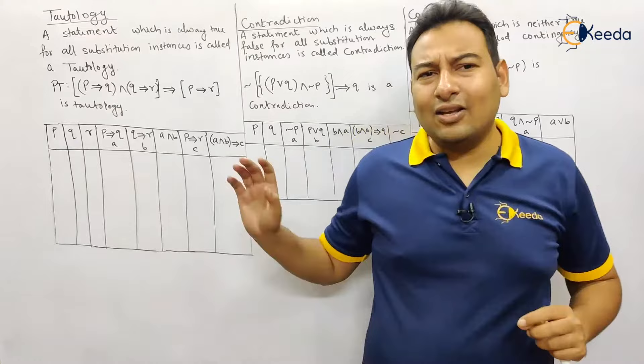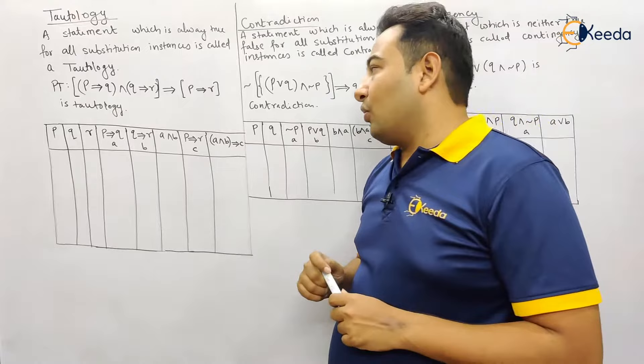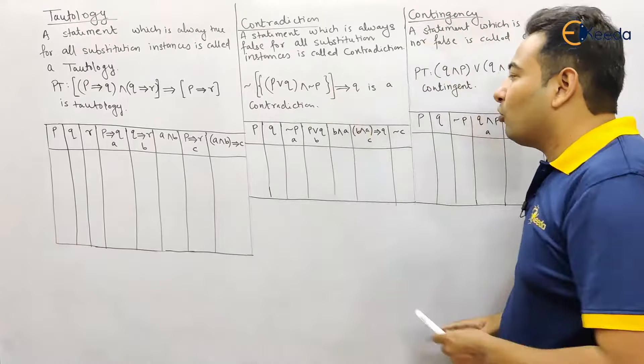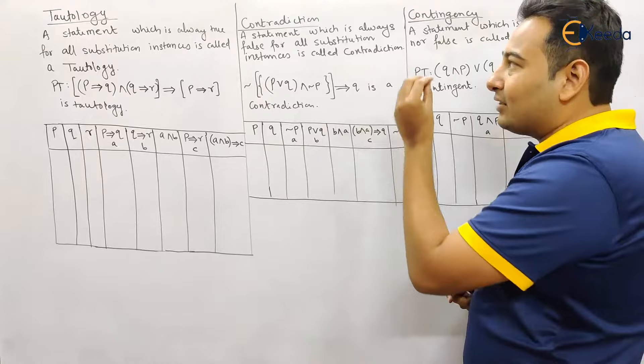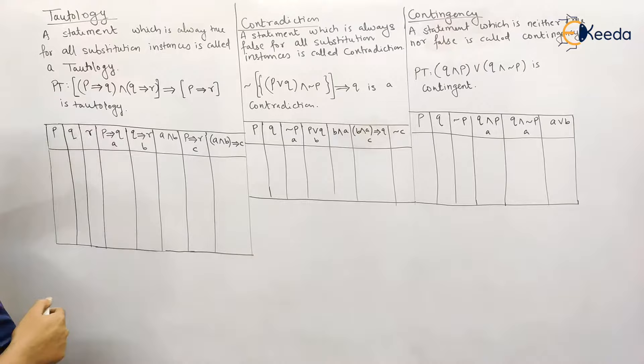What is a tautology? A statement which is always true for all substitution instances is called a tautology — that means if all the values in that particular column are true, it is a tautology. What about contradiction? If all the values in that column are false, it is a contradiction. And if we get mixed values — true and false — then it becomes contingency.